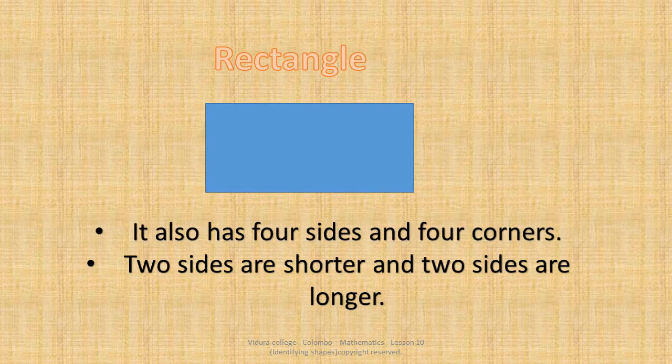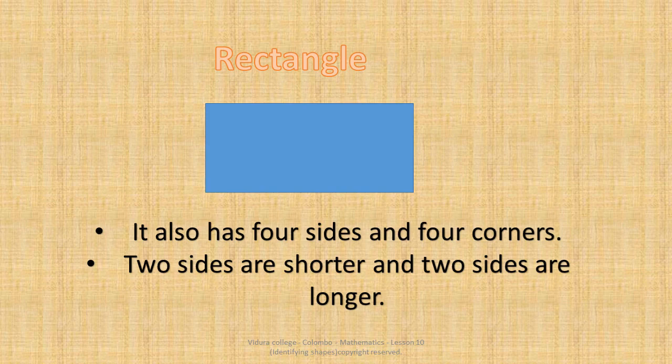Children, what is this shape? It has four sides and four corners. Two sides are shorter and two sides are longer. Can you guess this shape? Yes, it's a rectangle.